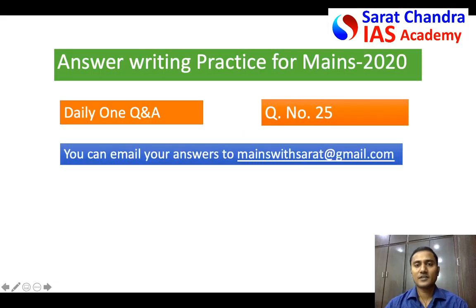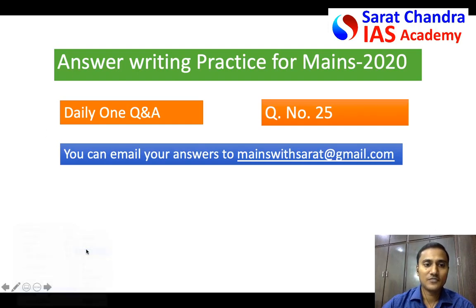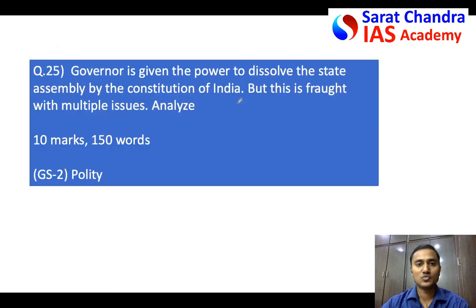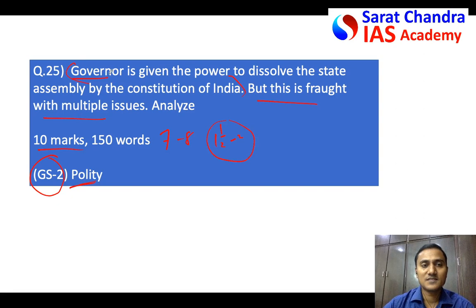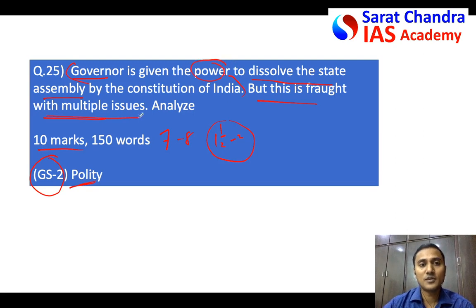Welcome to the main answer writing practice. Today we will discuss the answer for question 25 given yesterday. It falls under General Studies Paper 2. The question is regarding the Governor — it is a ten marks question, so you should write it in seven to eight minutes, around one and a half to two pages. The question has one statement and one actual question. The statement says the Governor of a state is given the power to dissolve the state assembly, but this power is fraught with multiple issues — you have to analyze those issues.